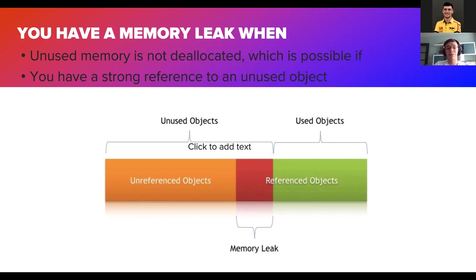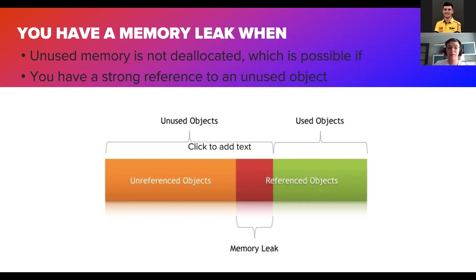Memory leaks can be like cancers — they can be benign or malign. A benign memory leak doesn't grow; you just have some unused objects remaining that you forgot to clean up, taking up a fixed portion of your heap. A malign memory leak, on the other hand, grows and can grow until the application crashes because it runs out of memory.